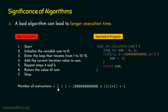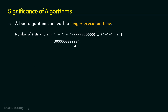The number of instructions is 2 plus 1 plus 10 to the power of 12 multiplied by (1 plus 1 plus 1), plus 1. We have 2 instructions for variable declarations, 1 for the loop initialization, and 3 instructions inside the loop executed 10 to the power of 12 times, plus 1 for the return statement. This gives us 3004 billion instructions total that our computer needs to execute.